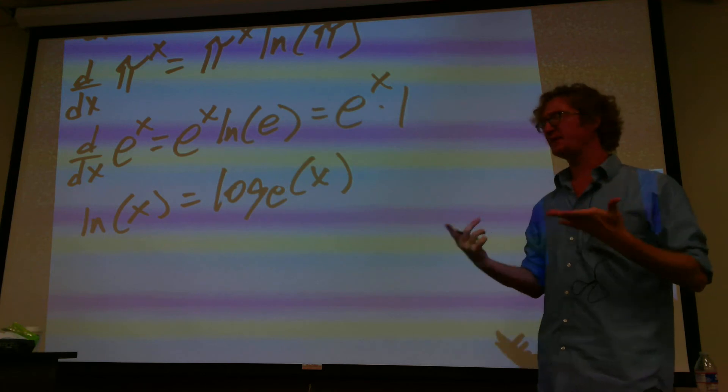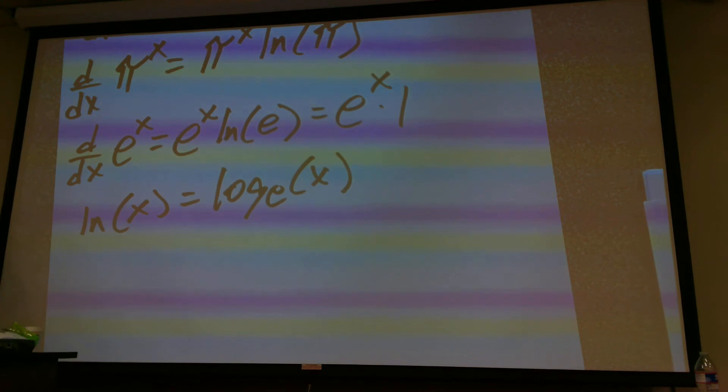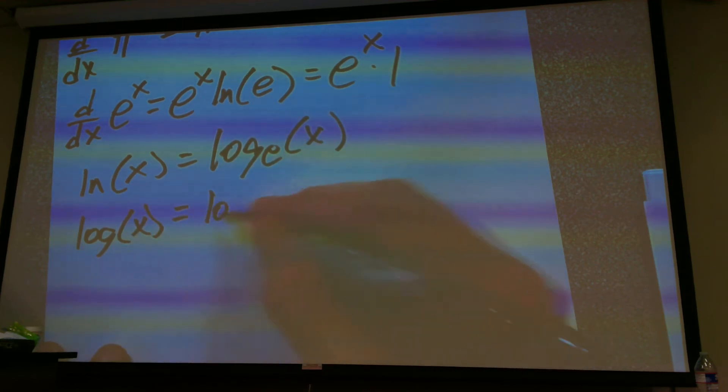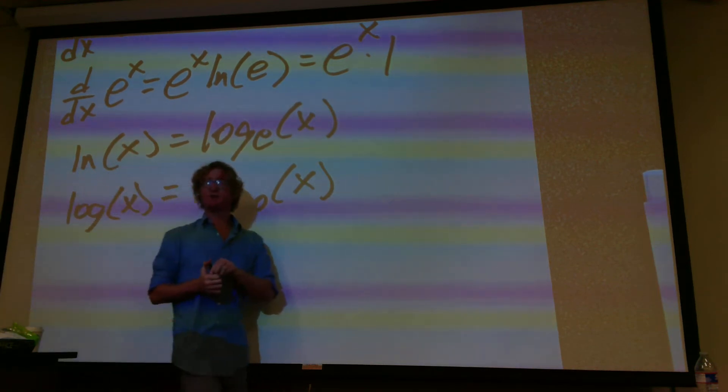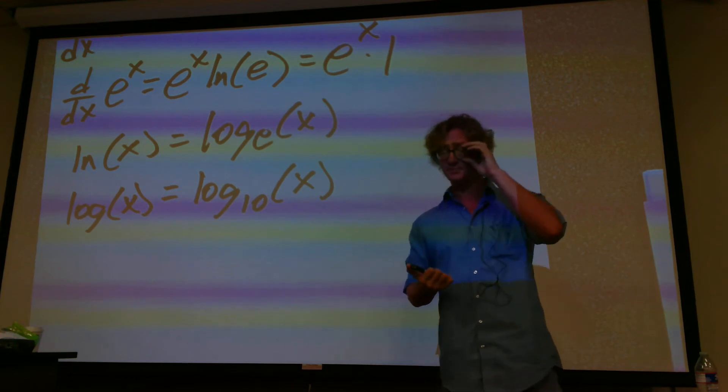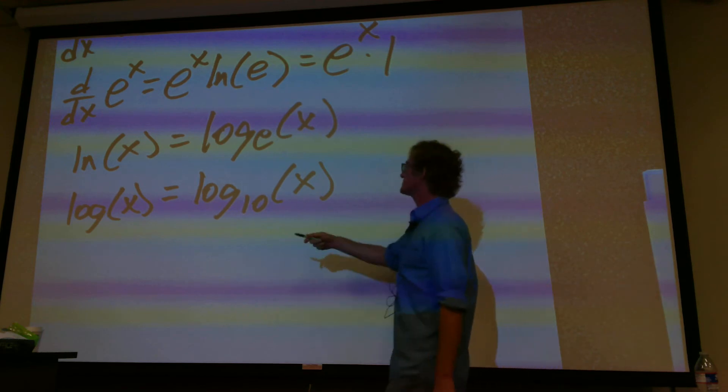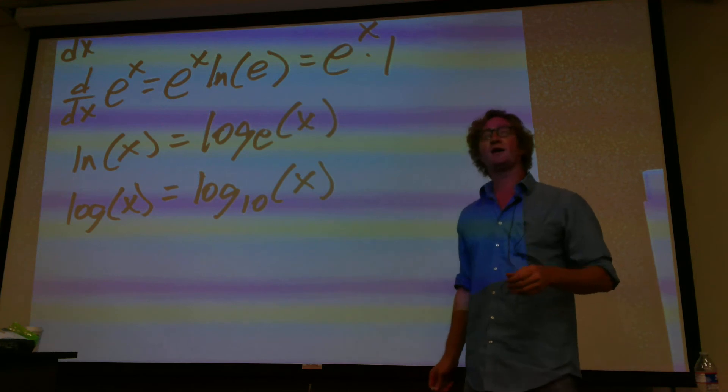And just for information sake, if you're looking at the calculator and it says log of x, that is going to be log base 10 of x. Now, this gets confusing. This is standard notation for a graphing calculator or any standard calculator, basically. The log is just log base 10 and the natural log is log base e.